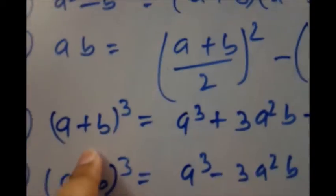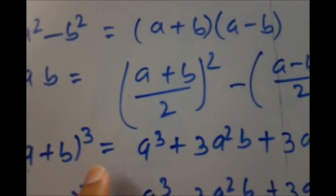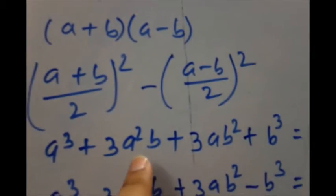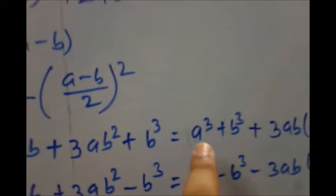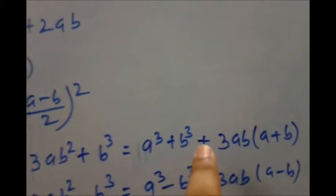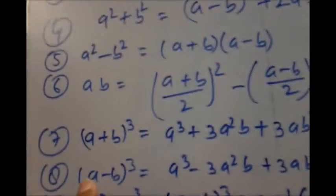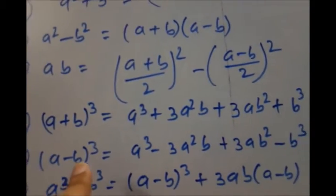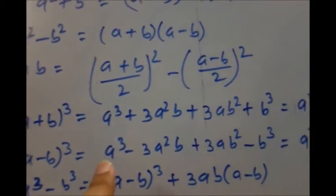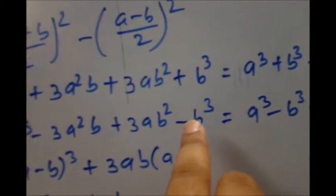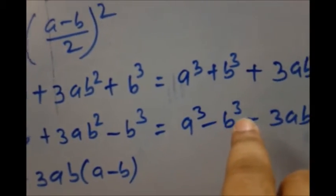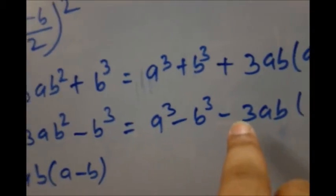Next: (a + b)³ = a³ + 3a²b + 3ab² + b³, which also equals a³ + b³ + 3ab(a + b). Next: (a - b)³ = a³ - 3a²b + 3ab² - b³, which also equals a³ - b³ - 3ab(a - b).